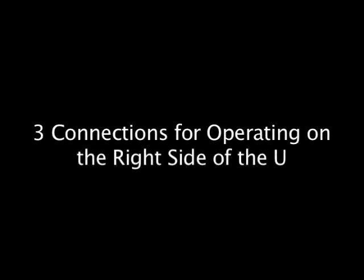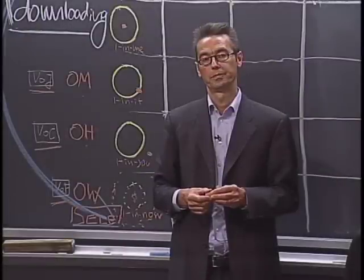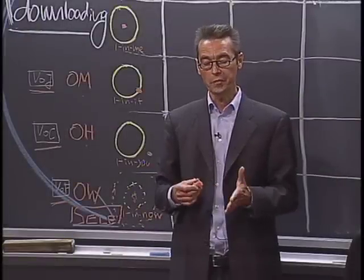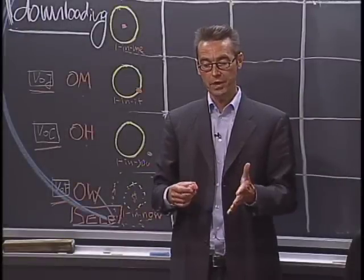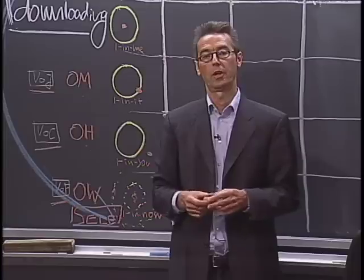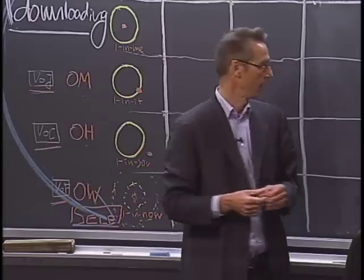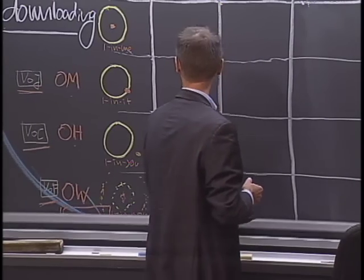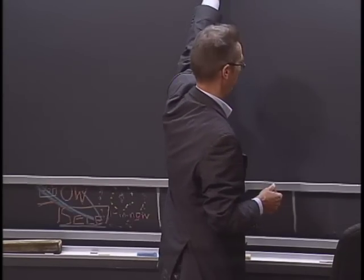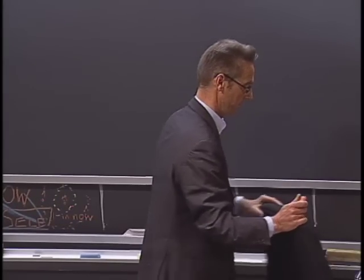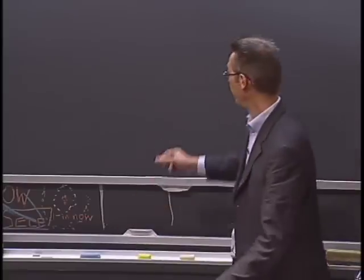In order to operate on the right-hand side of the U, we have to establish and act from three connections. Let me quickly draw these connections.